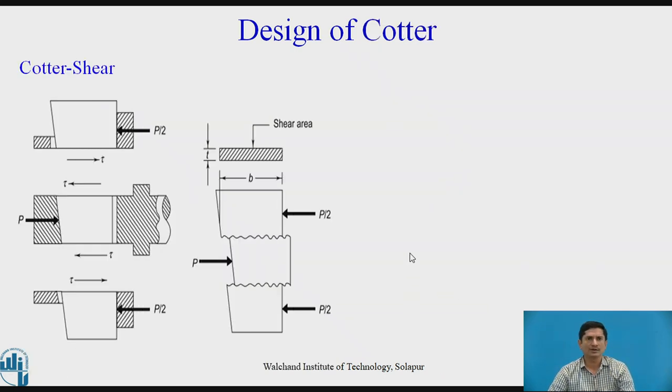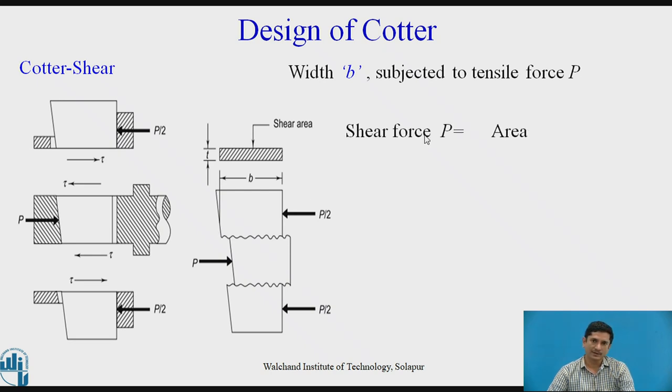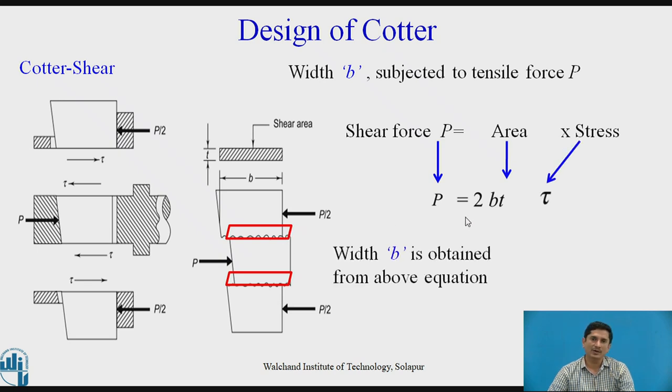Further the cotter under shear. You can see that this upper zone, lower zone. Spigot will pull it out and there will be a failure of cotter - shear failure. Area multiplied by stress. Force is P. This is the zone of shear. I need to use 2 times BT. B is the width. T is the thickness of the cotter. Multiplied by τ is the shear stress. Width B we can obtain from this equation.